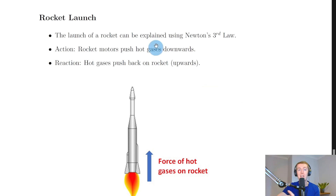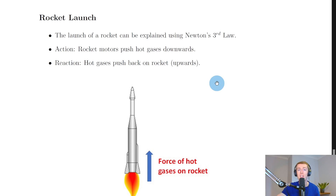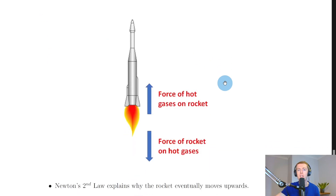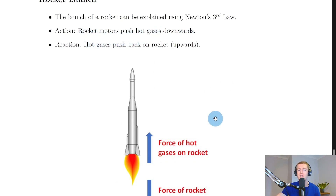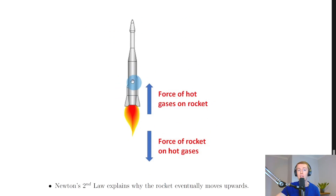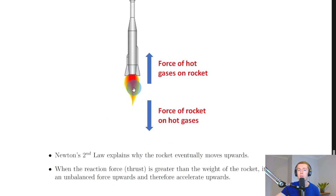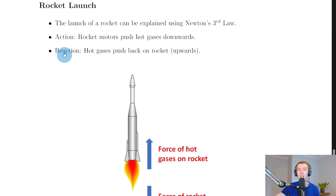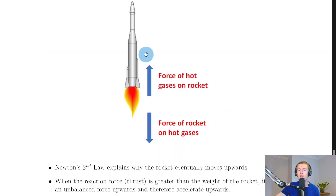Our last main example is a rocket launch. The launch of a rocket can be explained using Newton's Third Law - in fact you could use all of Newton's laws to explain it. For a rocket launch, the action and reaction forces are things pupils often get wrong because they get mixed up with what is causing the actual forces. The action force is that the rocket motors push the hot gases downwards - the force of the rocket on the hot gases. We then swap the words around: the reaction force is that the hot gases push back on the rocket, causing it to move upwards.